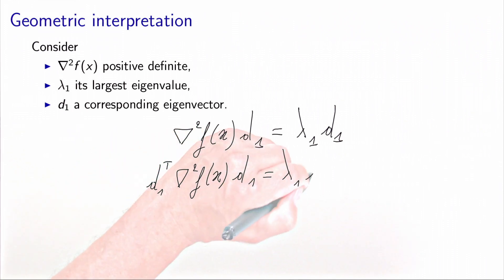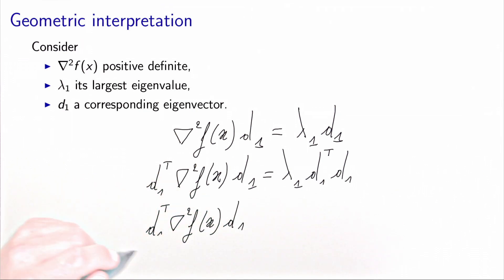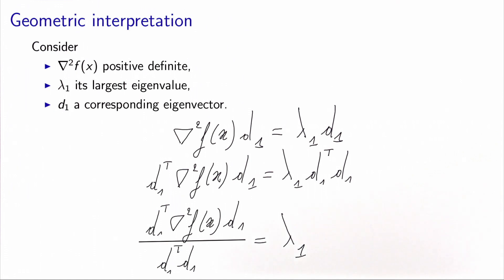Now let's pre-multiply this by d₁ transposed. We obtain λ₁ times d₁ transposed d₁. And now we divide everything by d₁ transposed d₁. After these manipulations, we have an expression of λ₁ which depends on the second derivative matrix and the vector d₁, which is the eigenvector. If you remember, when we analyzed the second derivative matrix, this quantity was interpreted as the curvature of the function at x along d₁.